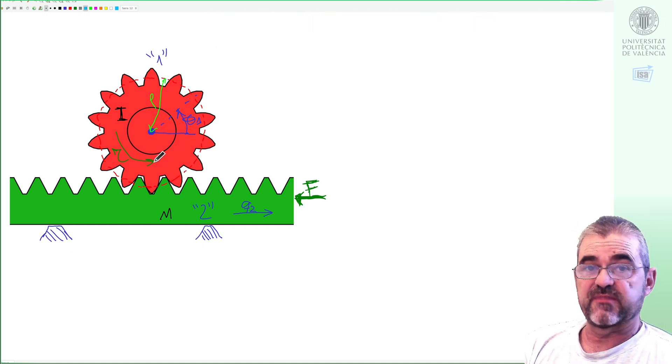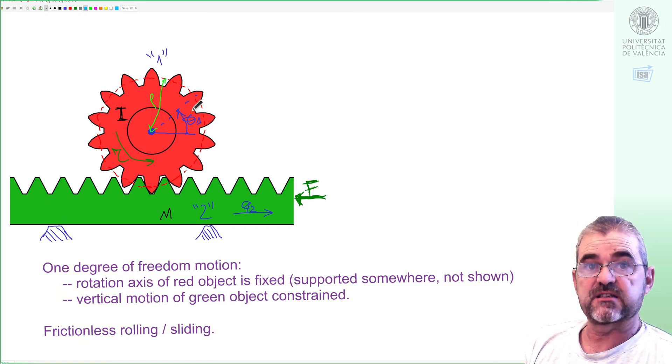We will assume that the rotation axis is fixed as well as the green element so that only rotation of the red pinion and horizontal movement of the rack element must be considered.